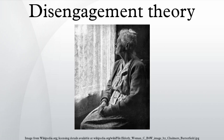Postulate 2: because individual interactions between people strengthen norms, an individual who has fewer varieties of interactions has greater freedom from the norms imposed by interaction. Consequently, this form of disengagement becomes a circular or self-perpetuating process.